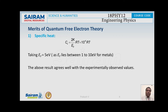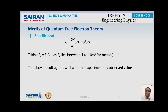Now I am going to talk about merits or successes of quantum free electron theory. The first merit is specific heat. The small value of specific heat for the conduction electrons can be explained with quantum free electron theory. As per classical free electron theory, Cv equals 3/2 R, but this is not in agreement with experimentally observed data. As per classical free electron theory, all conduction electrons are capable of absorbing heat energy. But as per quantum free electron theory, only those electrons closer to the Fermi energy level are capable of absorbing the supplied heat energy.